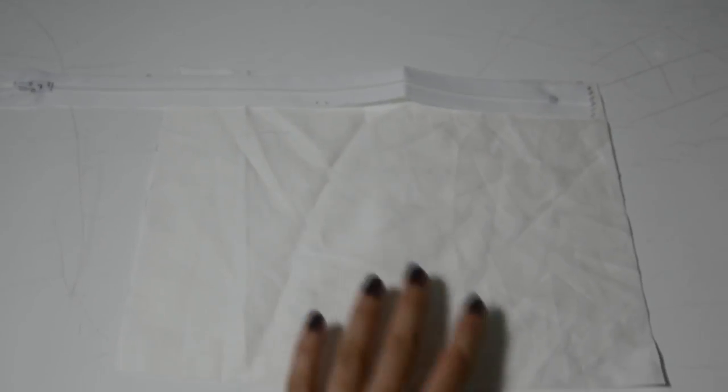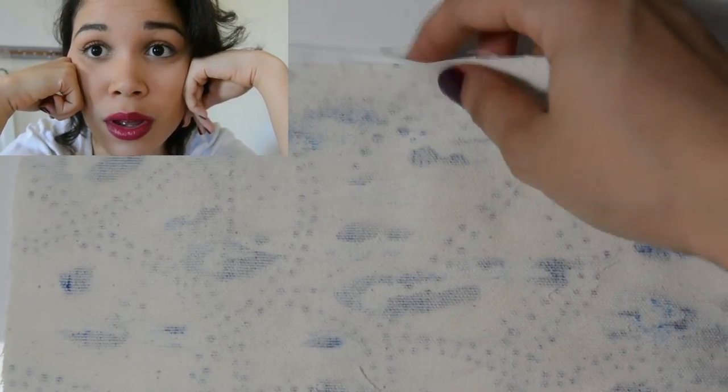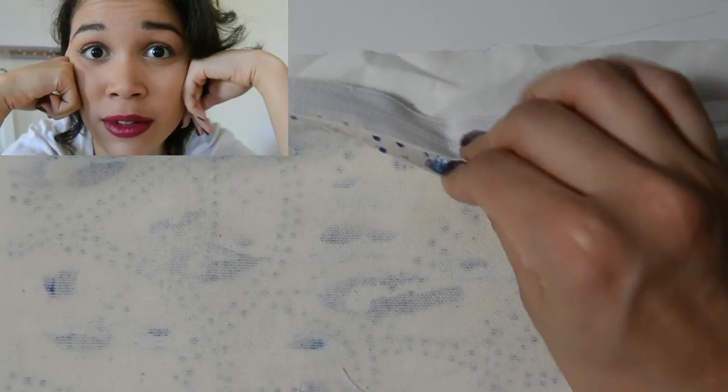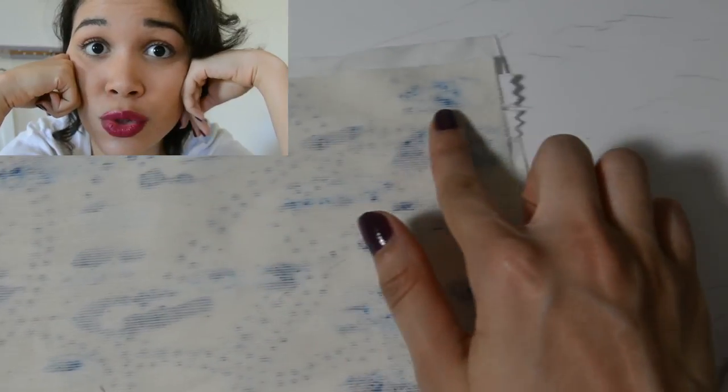Next up is sewing the pieces together. Do you see how I am layering the fabrics? This is a very important step. Where you layer the lining and the main fabric to the zipper, you don't want to mix the two.